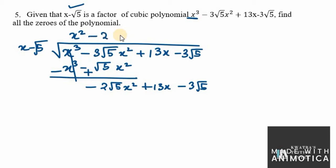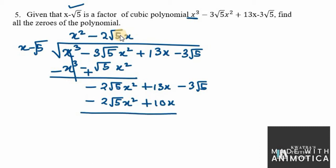We multiply by minus 2√5 x, giving minus 2√5 x times √5 which equals positive 10x. Changing signs, the 2√5 x² terms cancel to zero and positive becomes negative.